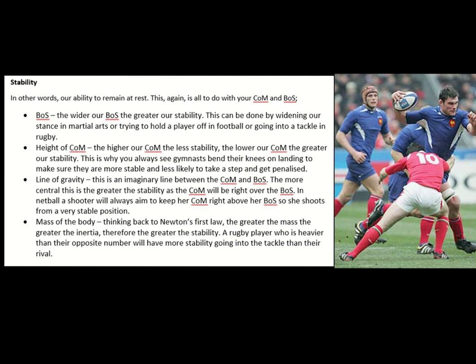Secondly, the Welsh player has lowered his centre of mass — the higher the centre of mass, the less stability; the lower it is, the greater the stability. Because he's dropped down, his centre of mass is lower and his base of support is wider. Looking at the line of gravity, that centre of mass is directly above his wide base of support, so the line of gravity passes straight through — he's in a very well-balanced position when he makes this tackle.